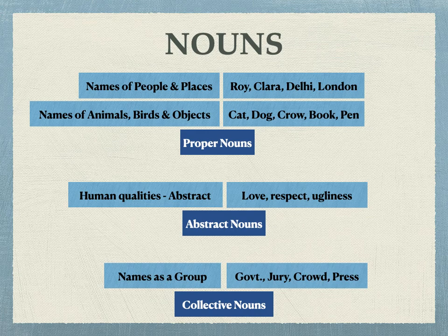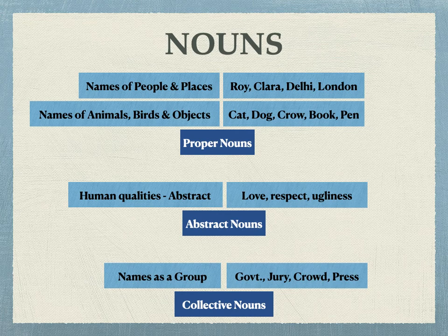Nouns which come as a group, like government, jury, crowd, press, etc., are called collective nouns. So these are the three major classifications of nouns: proper nouns, abstract nouns, and collective nouns. Remember concrete nouns too — concrete nouns are things which you can touch and see, whereas abstract means something you can feel or understand for yourself.